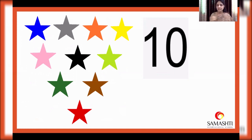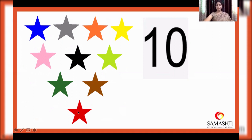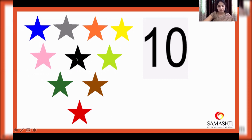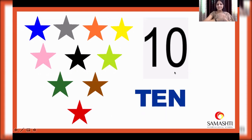Wow, I can see so many stars here. But how many? Let's count. One, two, three, four, five, six, seven, eight, nine, ten. Ten stars. And can we have a quick look at the colors of these stars? Yes, come on. Yellow, orange, gray, blue, light green, black, pink, brown, dark green and red. That's wonderful. So ten stars. Ten. T-E-N. Ten. Lovely.